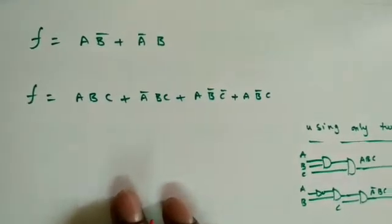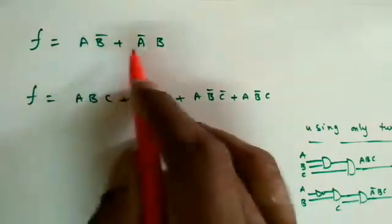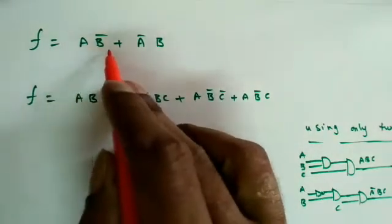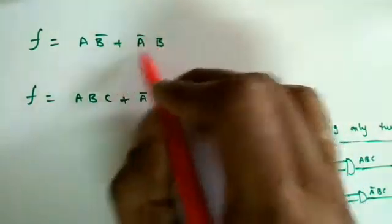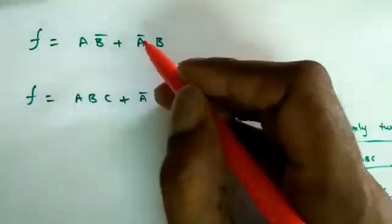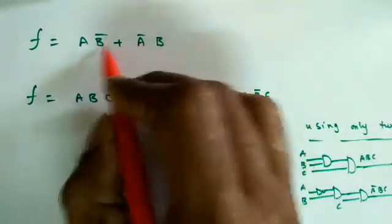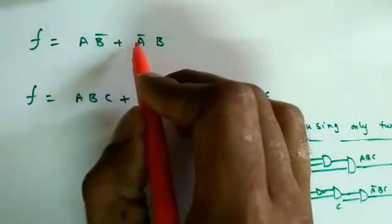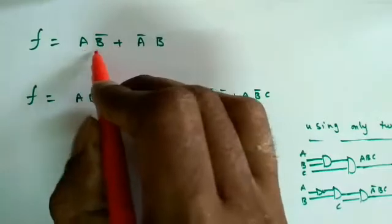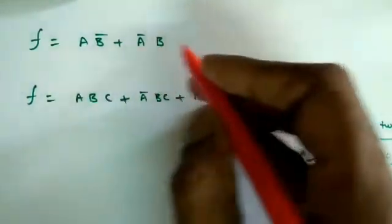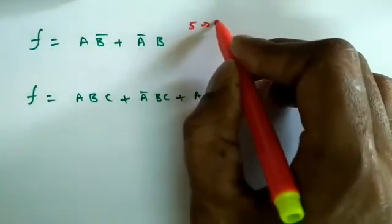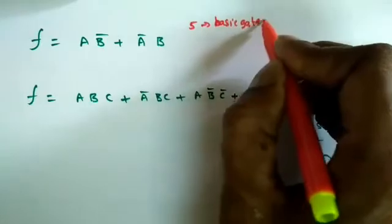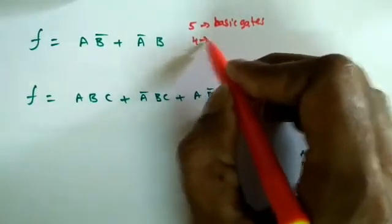For example, take the two-variable function F = AB̄ + ĀB, which is an XOR gate. Using basic gates, we need two NOT gates, one AND gate, one AND gate, and one OR gate — a total of five basic gates. Using only NAND gates, we need four NAND gates.